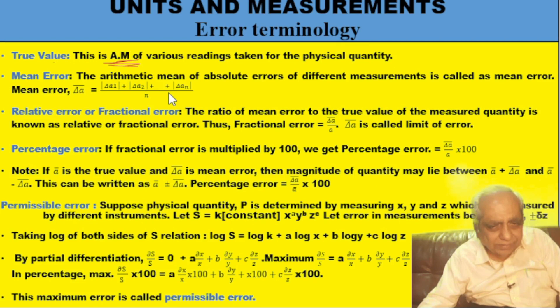We take the modulus because otherwise, for example, one error is +0.5 and another is −0.5, the sum would be zero — suggesting no error — but error has taken place in both cases. So we take the modulus of each error, add them, and divide by n — that is the mean error. Mean error divided by the arithmetic mean is called relative error or fractional error: δa/a. If I multiply this fraction by 100 I get the percentage error.